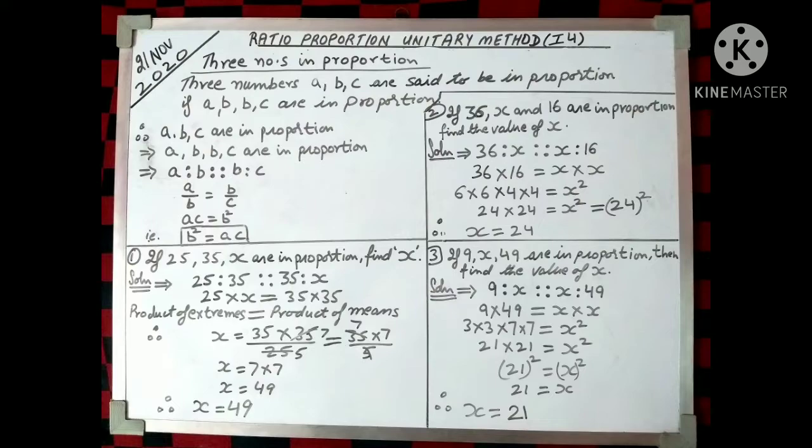Now see the third one. If 9, x, and 49 are in proportion, then find the value of x. That is, we will write 9, x, x, 49, and then 9 into 49 is equal to x into x, because product of extremes is equal to product of means when we talk of proportion. So we get the answer as 9 into 49 is equal to x into x, that is 3 into 3 into 7 into 7 is equal to x square, 21 into 21 is equal to x square, 21 square is equal to x square, therefore x is equal to 21. Whenever you have a situation like this where you have x square, try to factorize the numbers in such a way that you get a product as something into something, as we got it here 21 into 21, or in the previous question as 24 into 24, and you can easily understand what the answer will be.